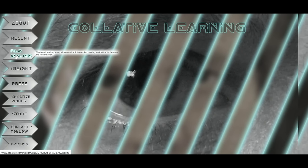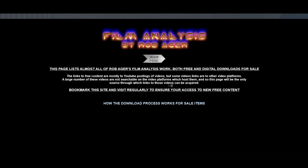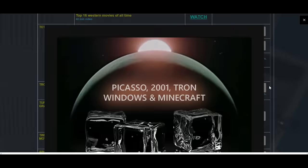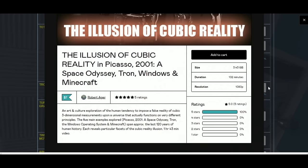That was a clip from a much longer video on my website, linked in the video description below. If you go to the film analysis page, you'll find the full video — it's an hour and 43 minutes long, called 'The Illusion of Cubic Reality: Picasso, 2001: A Space Odyssey, Tron, Windows, and Minecraft.' It goes quite deep across a strange subject spanning multiple media — this idea that has dominated human civilization, the perception that reality exists in a cubic mathematical form, which it doesn't.